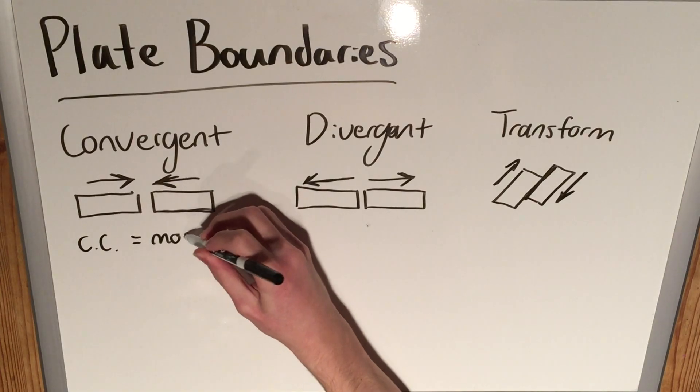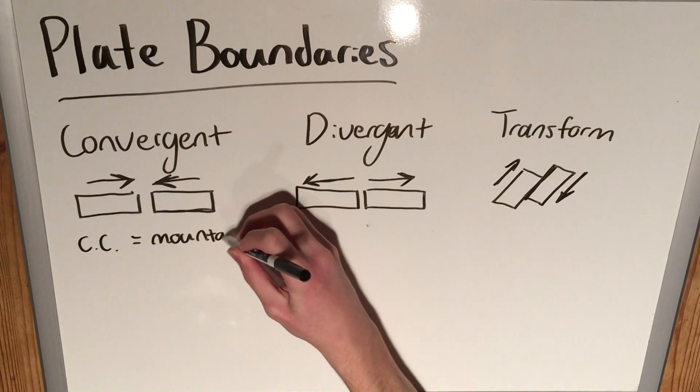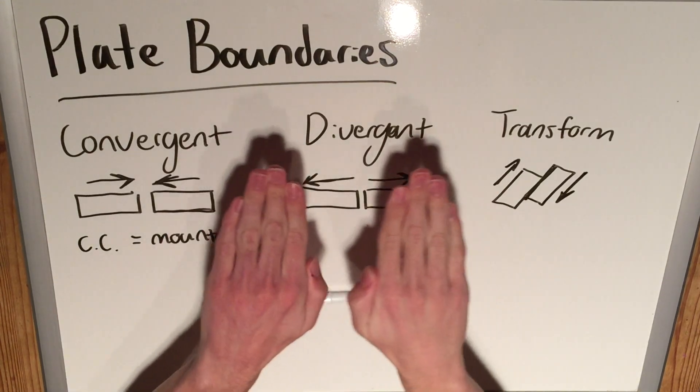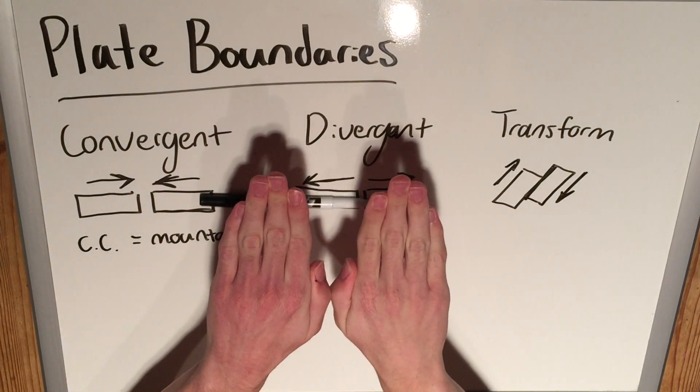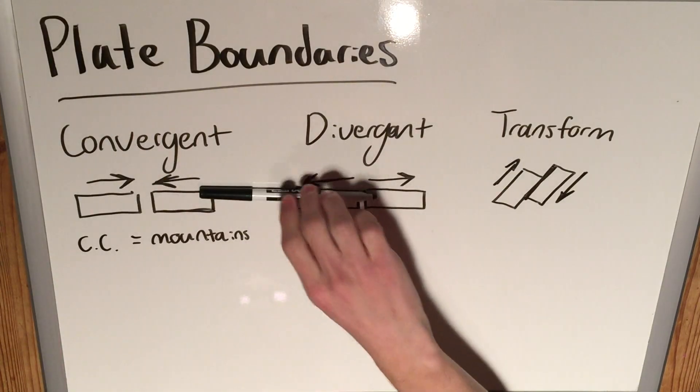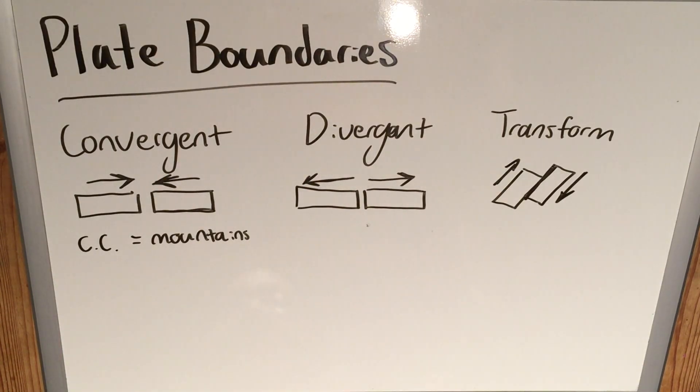Because if you think of it, sort of like two plates being pushed together, what's going to happen? They're going to, under the stress, fold upwards like that. So a continental and a continental results in mountains.